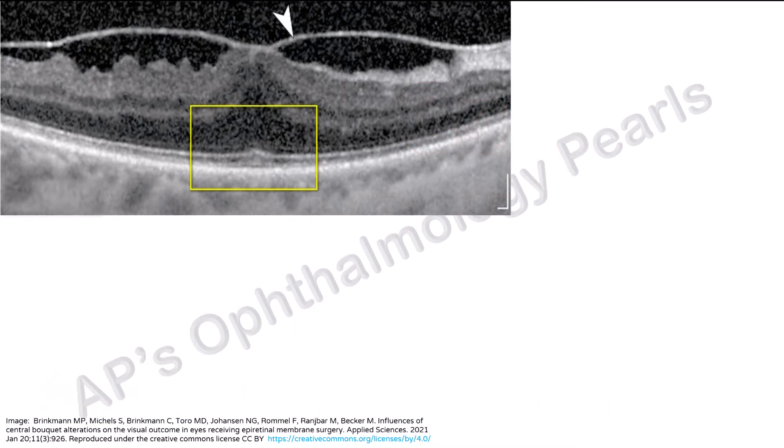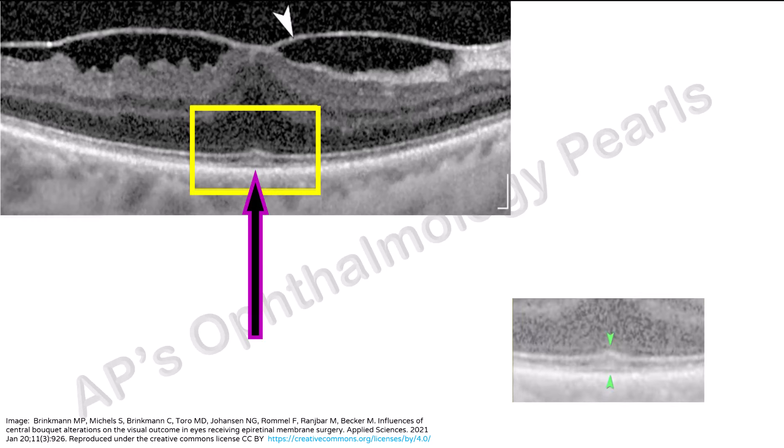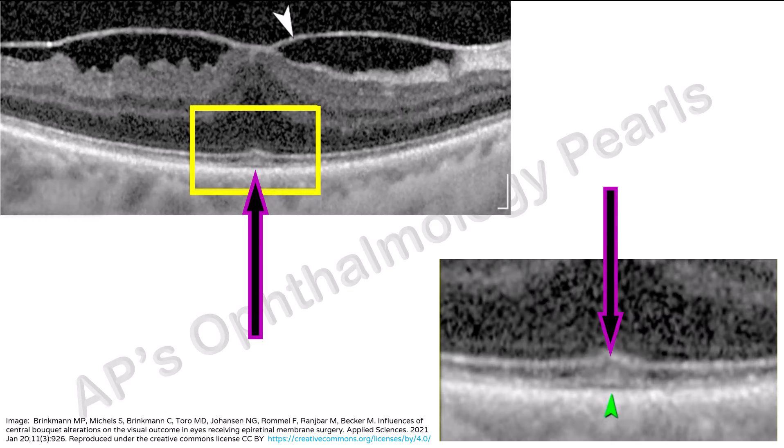The cotton ball sign is the appearance of a thickened or roundish fuzzy hyper-reflective area between the inner segment ellipsoid zone and the interdigitation zone in the central foveal bokeh on OCT.